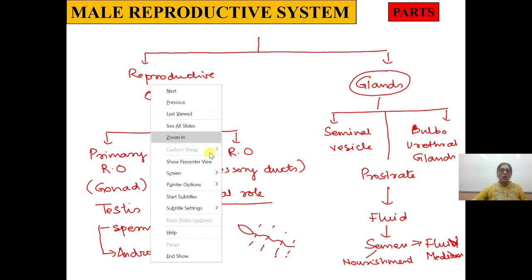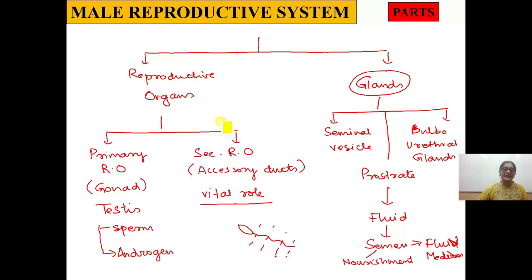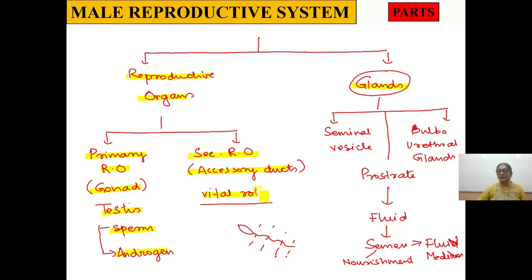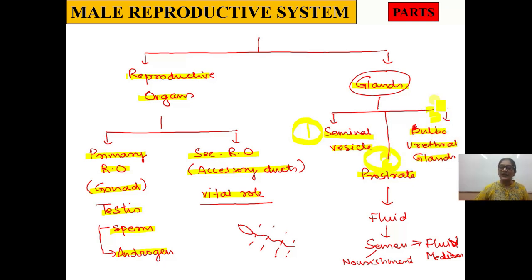So this is the overview of the male reproductive system: reproductive organs — primary (gonads/testis) and secondary (accessory ducts) — and reproductive glands: seminal vesicle, prostate gland, and bulbourethral gland. The glands produce semen, which nourishes the sperm and provides a fluid medium for movement. Now we will start with the main primary sex organ — the testis.